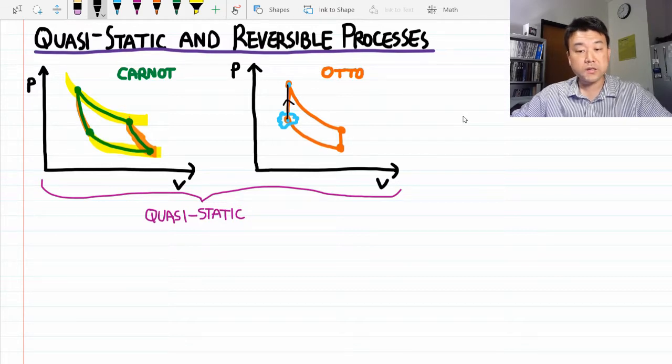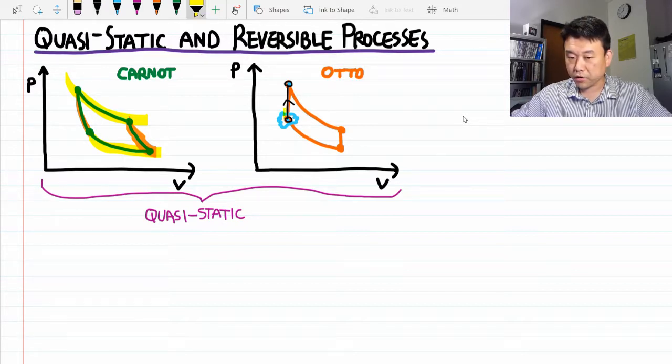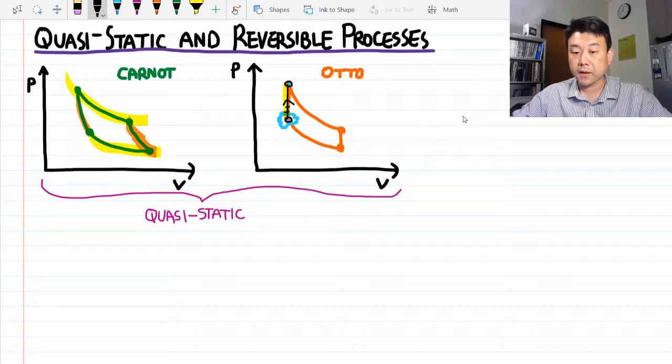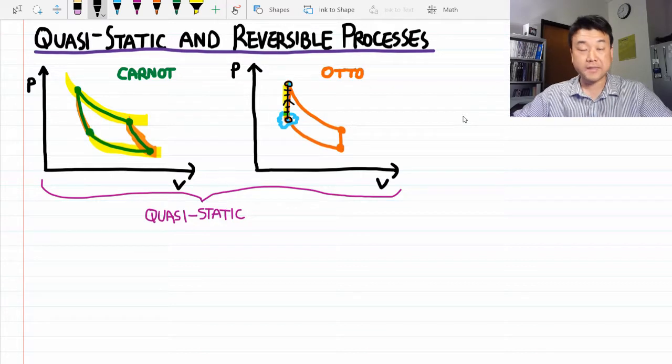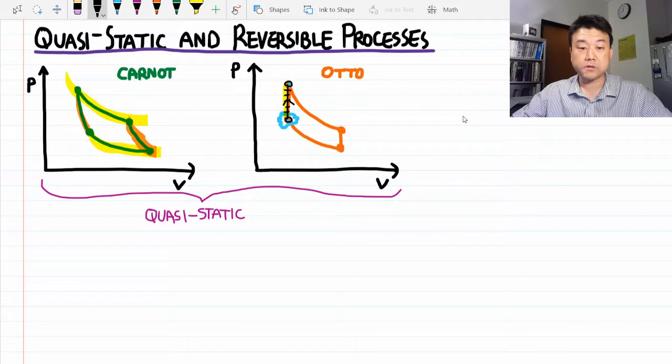And here's an important and subtle point to understand regarding which processes are quasi-static. Every process that can be diagrammed on a PV diagram is quasi-static. It's because drawing this path implies that pressure and volume are well defined at every step along the way. And that's only possible if this process happens quasi-statically. Or at least we are idealizing the real-world non-quasi-static process as